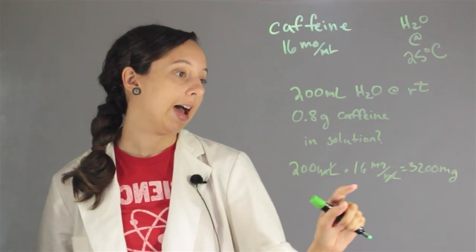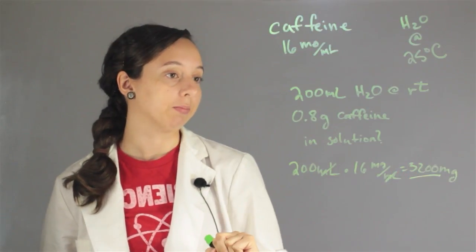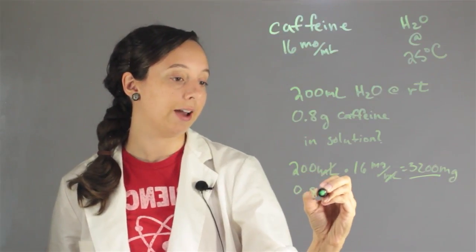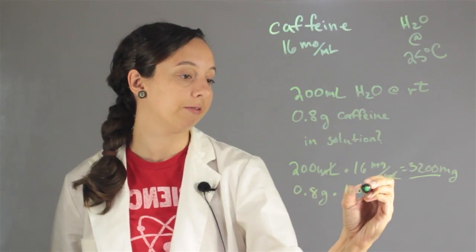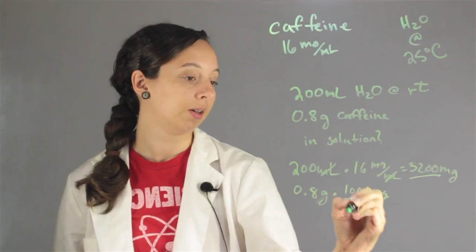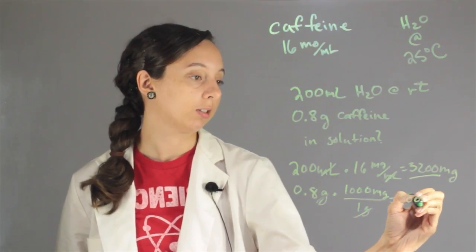So this means that we could do this as a maximum. And so now if we have our 0.8 grams caffeine, and we convert it to milligrams, so remember every 1,000 milligrams is 1 gram, then we'll get 800 milligrams, which is much less than the maximum.